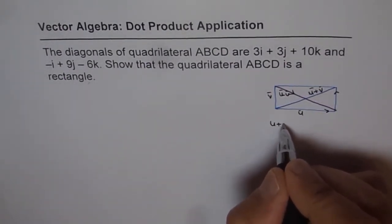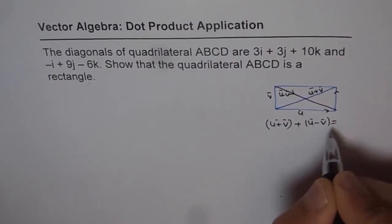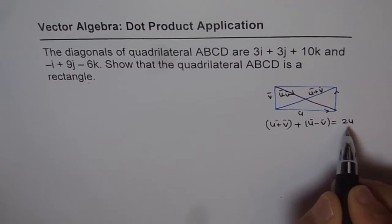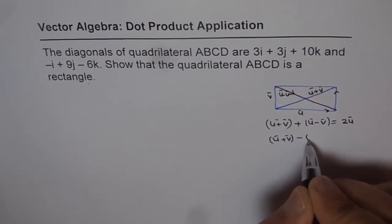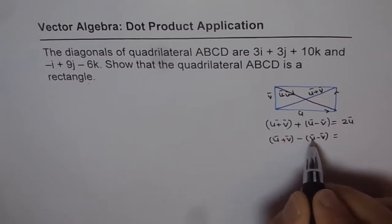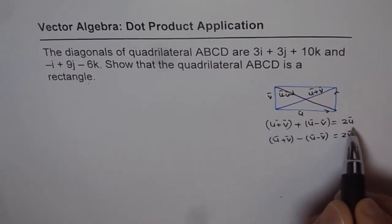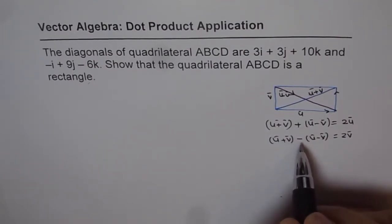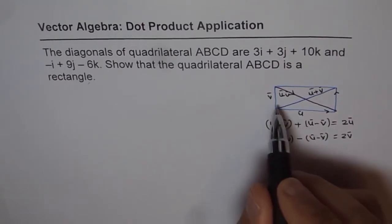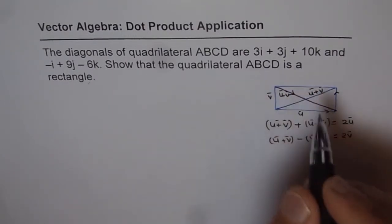If I do (u + v) + (u - v), I get 2u. And if I do (u + v) - (u - v), I get 2v. So if I know the sum and difference, I can find each vector — each vector is half of these. This is the principle we'll use to find u and v. To show it is a rectangle, the dot product between u and v should be 0.